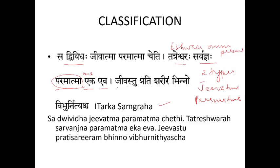Jivastu means Jivatma. It is Pratidhishariram Bhinna — it differs body to body. As many bodies as there are in the population, that many Jivatmas exist. It is based on the body. It is also Vibhu and Nitya — ever-present throughout the body when life is there.